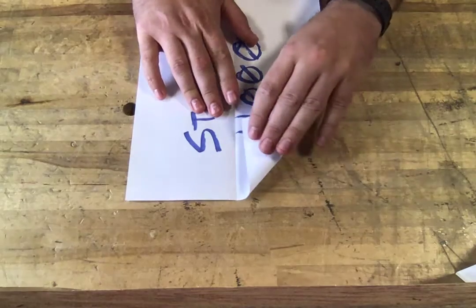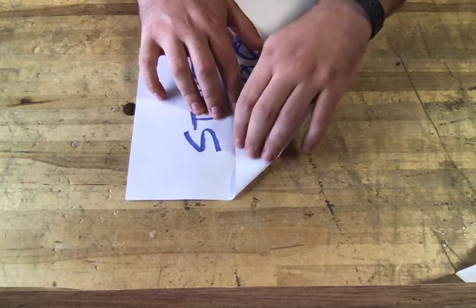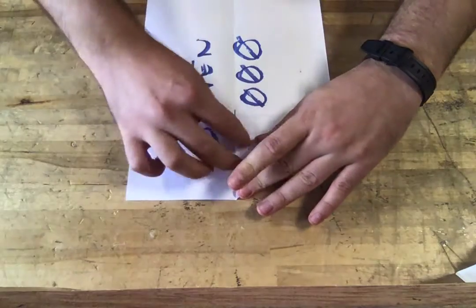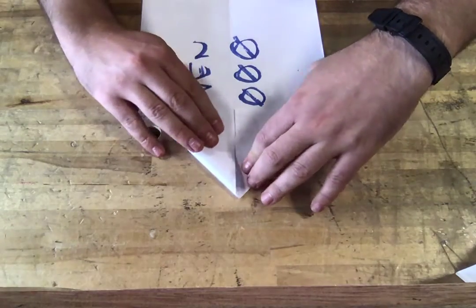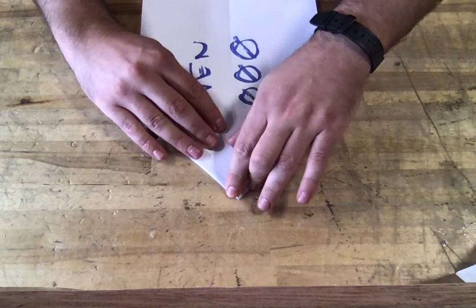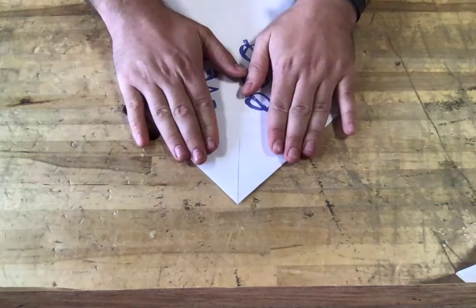And you're going to fold this top corner in. Now once we get that, and again looking at precision, you're really trying to get that edge of the paper on the center fold. It's kind of like your traditional paper airplane. We're going to mark that and get that corner going.